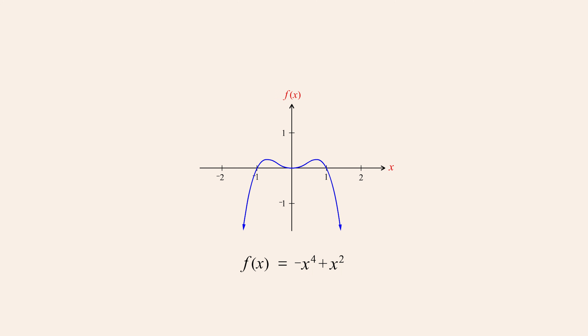The function's value is thus negative one-sixteenth plus one-fourth, or positive three-sixteenths. On the other hand, for x-values greater than one or less than negative one, the value of the polynomial function becomes negative. This is because for that range of x-values, the magnitude of x-squared is smaller than the magnitude of negative x to the fourth power. For example, when x is two, negative x to the fourth power is negative sixteen and x-squared is four, so the function's value is thus negative twelve.